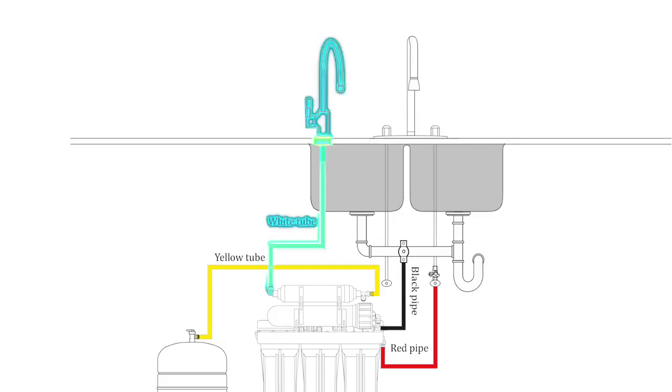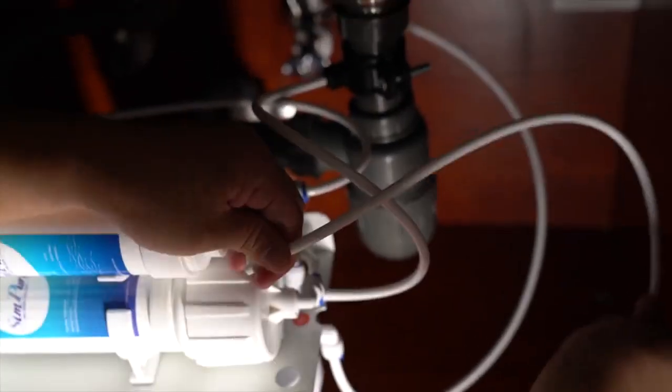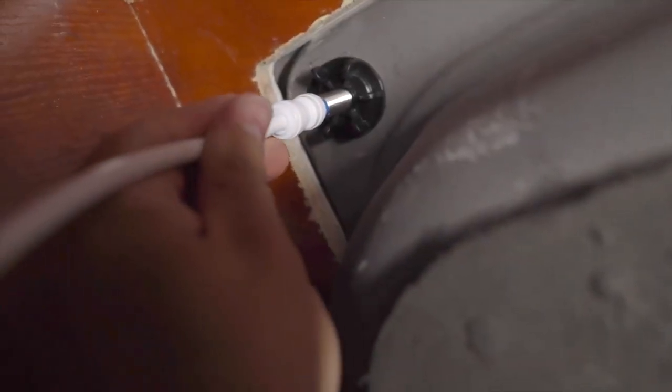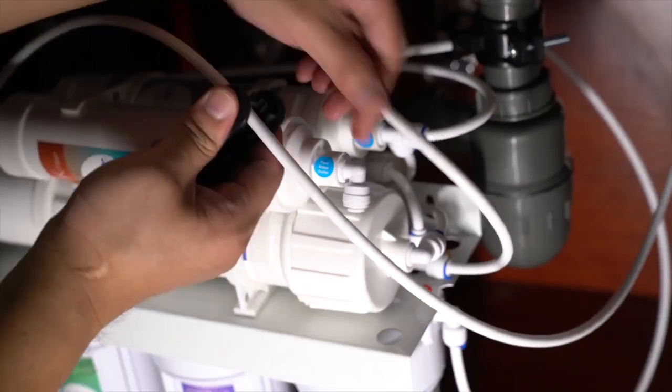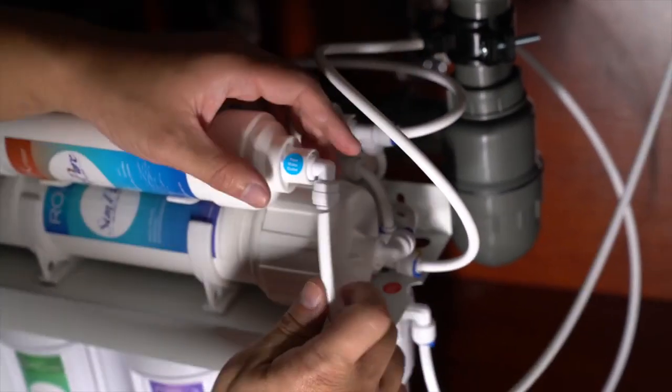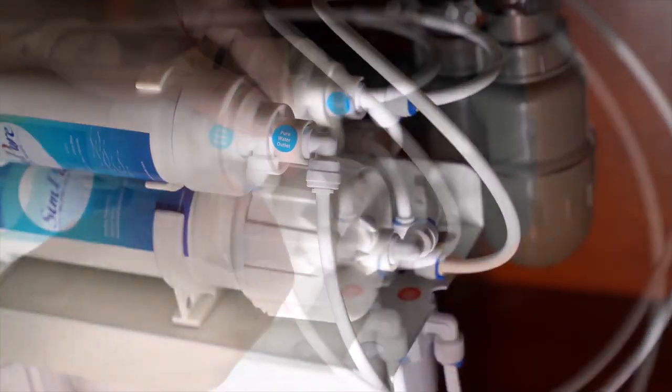Connecting the faucet: Select the appropriate length of the PE tube and insert it into the T1 faucet connection. Connect the other end of the tube onto the inlet of the ALK filter. Fit the blue locking clips to both tube connections.